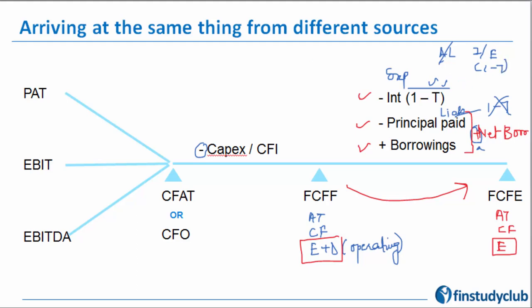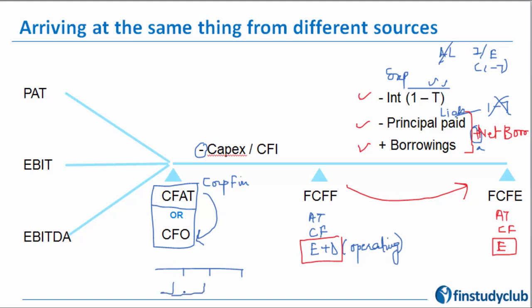An important point: why do we apply 1 minus T to interest but not to principal and borrowings? Interest is an expense and a tax-deductible expense, so only the expense part is made after-tax. Principal and borrowings are the liability portion — they don't go to the income statement. There is no tax shield on assets or liabilities; tax applies only to income and expenses.